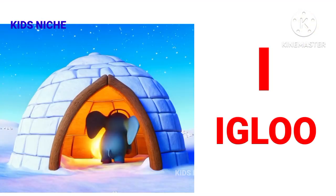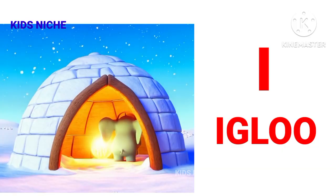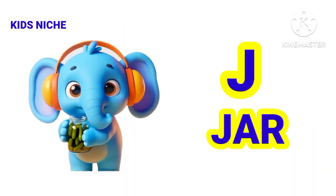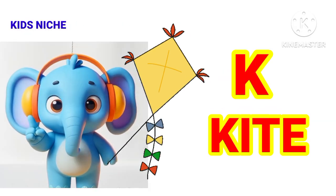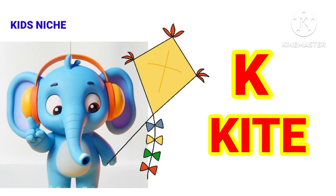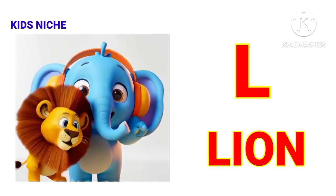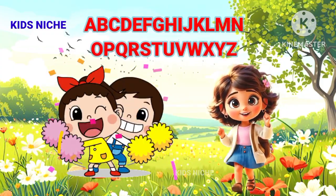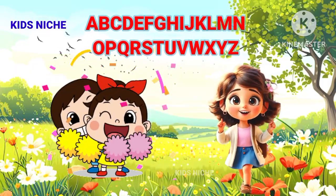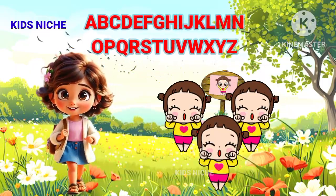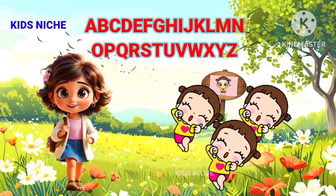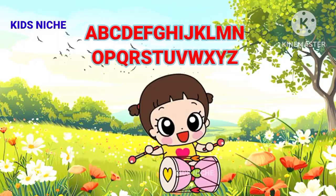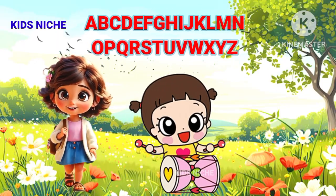I is for igloo made of snow. J is for jar where cookies go. K is for kite flying so high. L is for lion with a mighty cry. Let's sing our ABCs, from A to Z with fun and glee, learning letters one by one. Come along, it's so much fun!